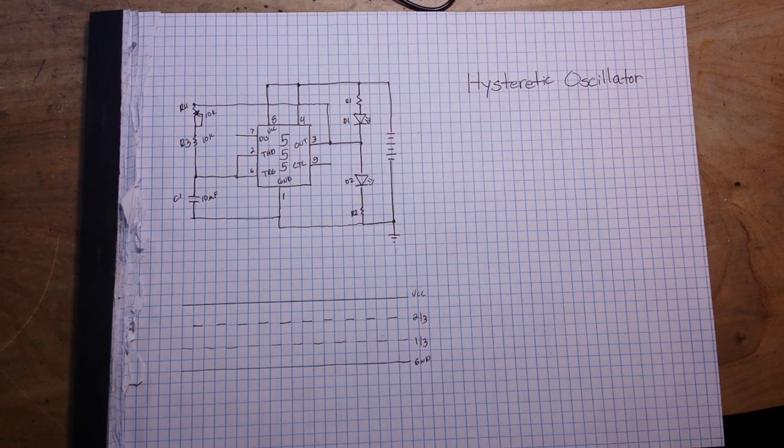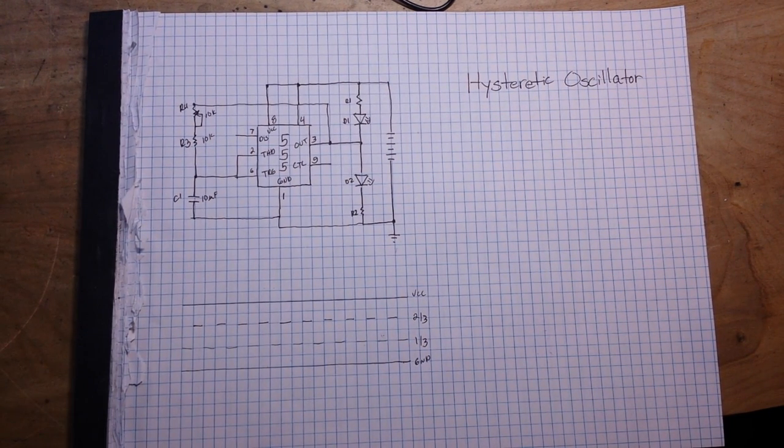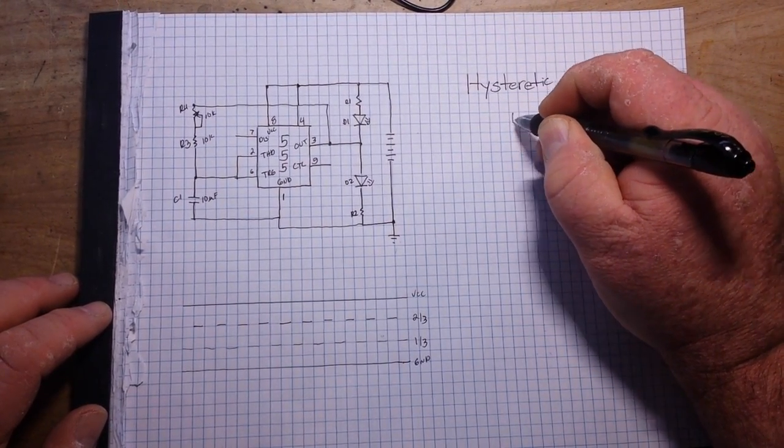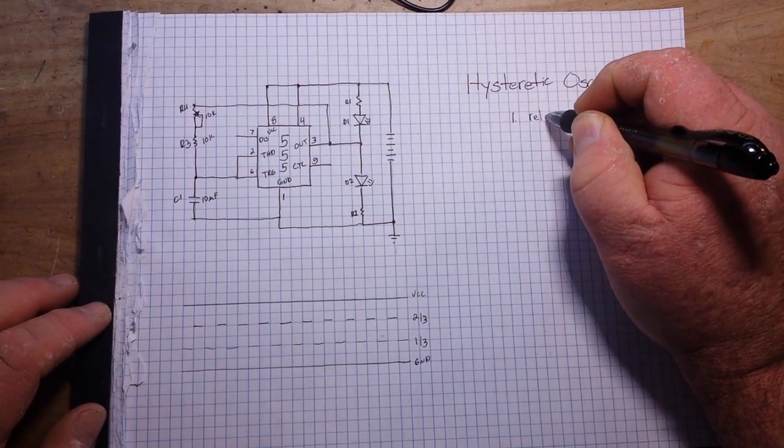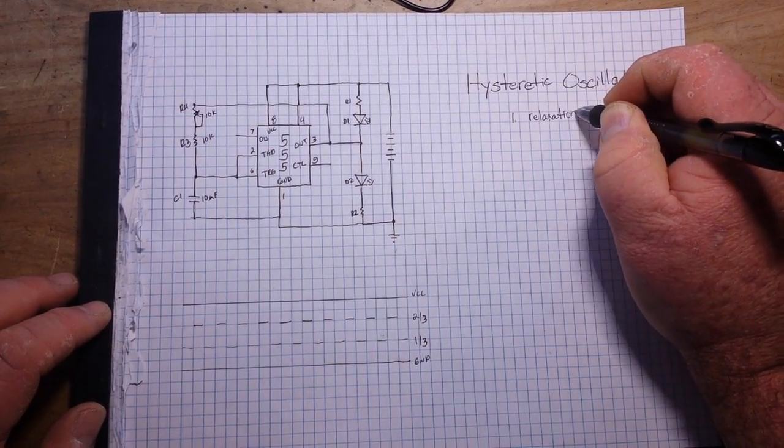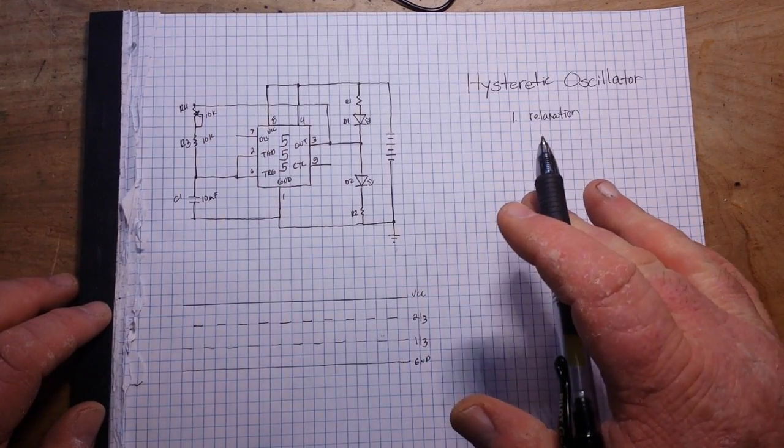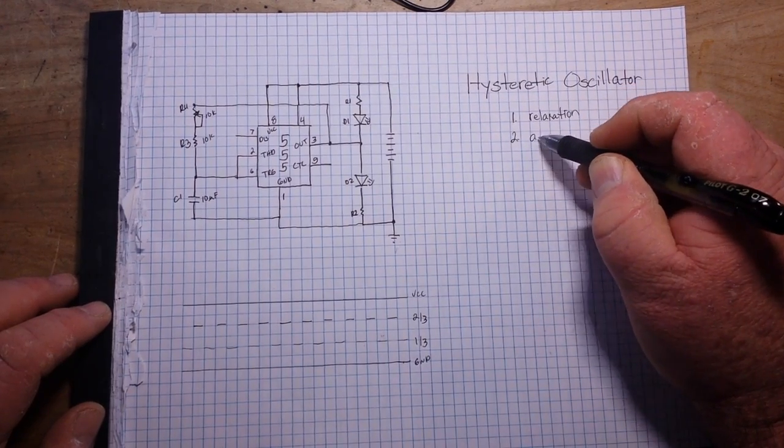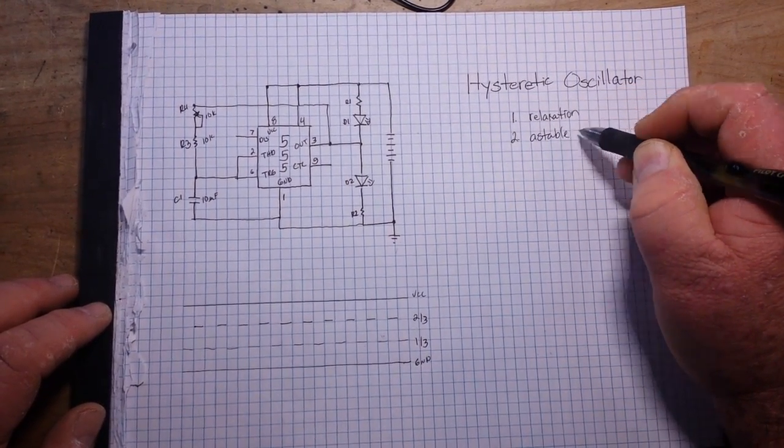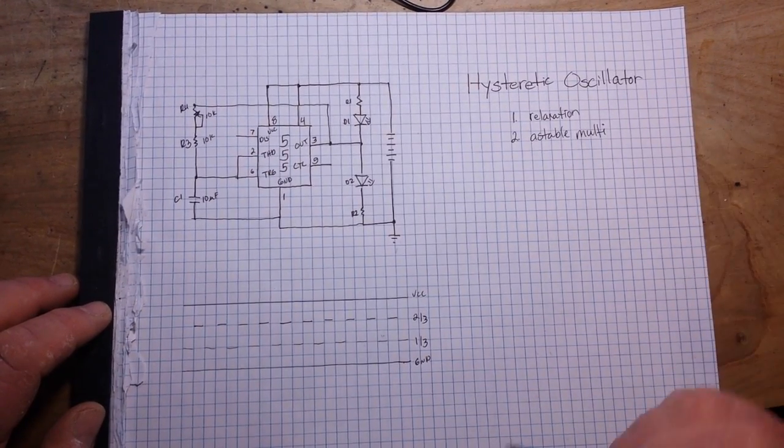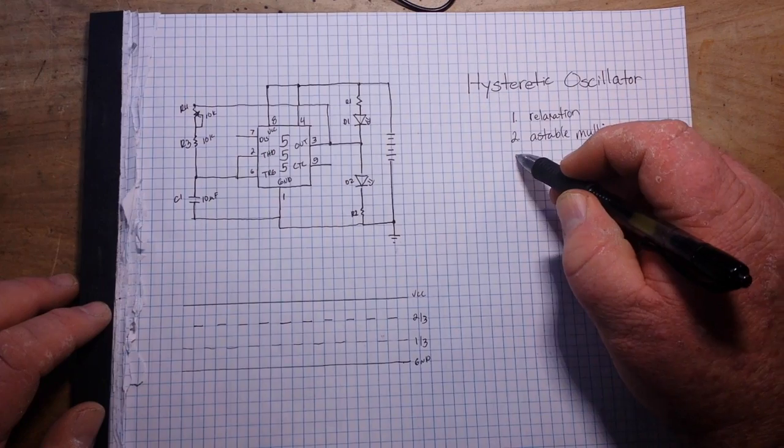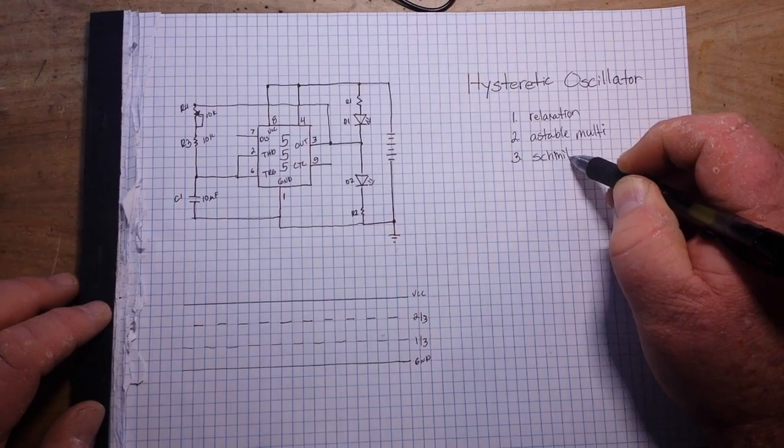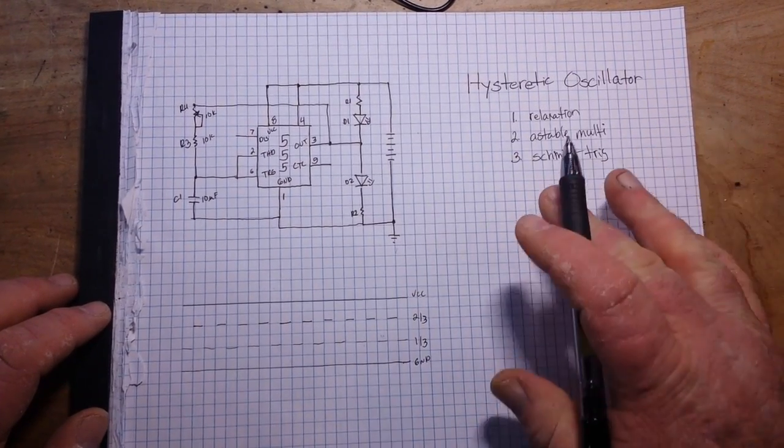So anyway, our hysteretic oscillator using the 555 timer is three things. First, it is a type of relaxation oscillator—check out my oscillators playlist if you want to know more about that. It is also a form of an astable multivibrator, and finally it's also a Schmitt trigger.